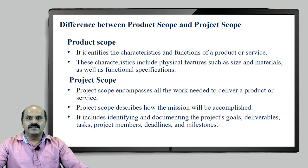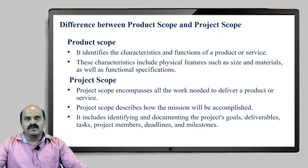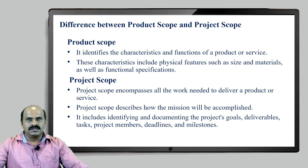Project scope describes how the mission will be accomplished — this statement itself defines what exactly is meant by project scope. We have to decide the steps by which the product is going to get manufactured and supplied to end customers. It includes identifying and documenting the project goals, deliverables, tasks, and project members. Project scope is considered to be at the macro level, while product scope is considered at the detail or manufacturing level of the particular product.